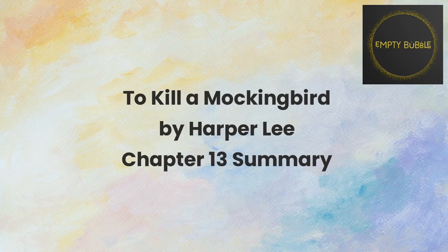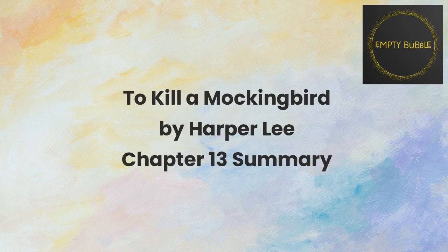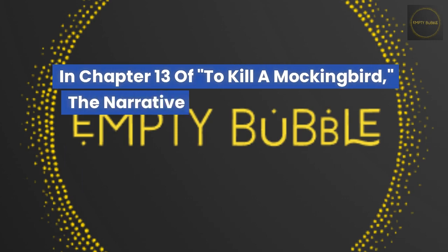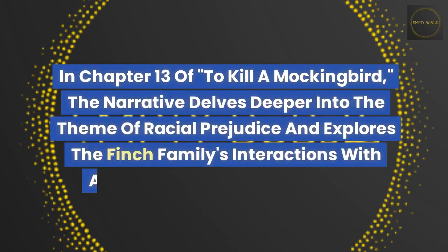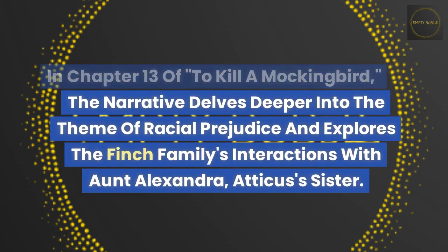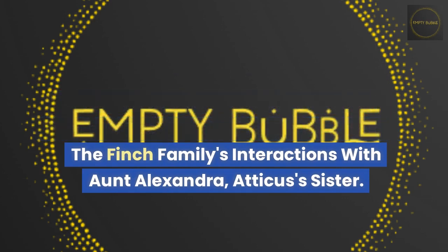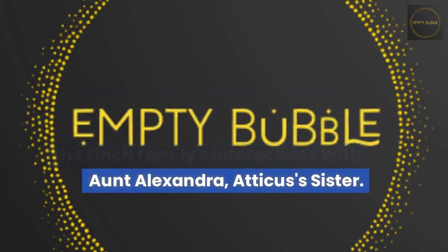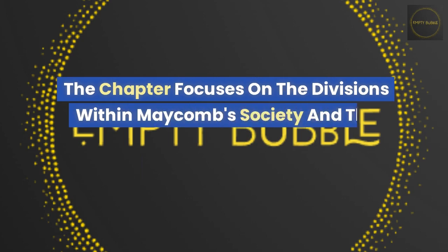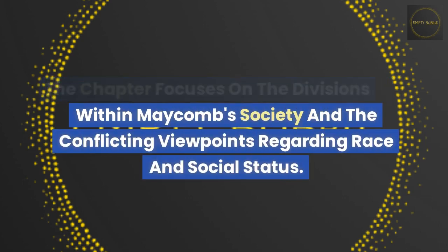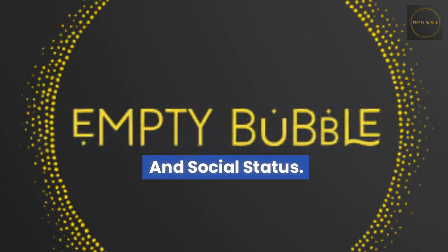To Kill a Mockingbird by Harper Lee — Chapter 13 Summary. In Chapter 13, the narrative delves deeper into the theme of racial prejudice and explores the Finch family's interactions with Aunt Alexandra, Atticus's sister. The chapter focuses on the divisions within Maycomb's society and the conflicting viewpoints regarding race and social status.